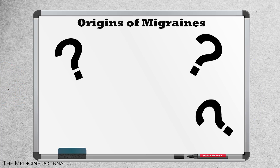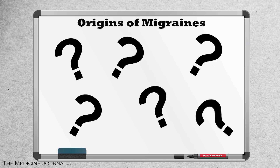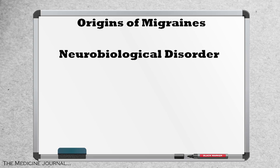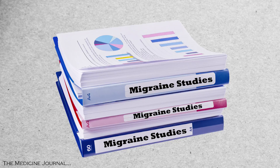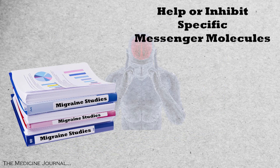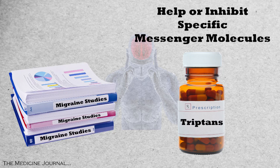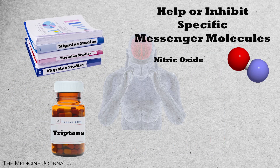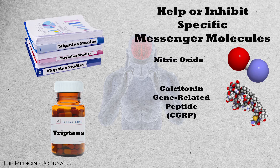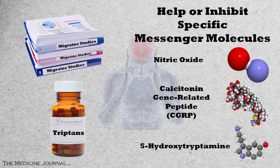While no one has definitively shown the exact origin of migraines, it is now known to be a neurobiological disorder — basically an illness of the nervous system caused by biological factors like genetics or metabolism. This is known because studies have shown that if you either help or inhibit specific messenger molecules with a class of drugs like triptans, it will greatly reduce migraine symptoms. Those molecules are nitric oxide, calcitonin gene-related peptide, and 5-hydroxytryptamine.